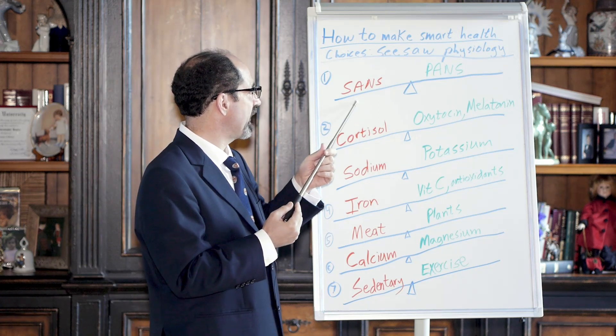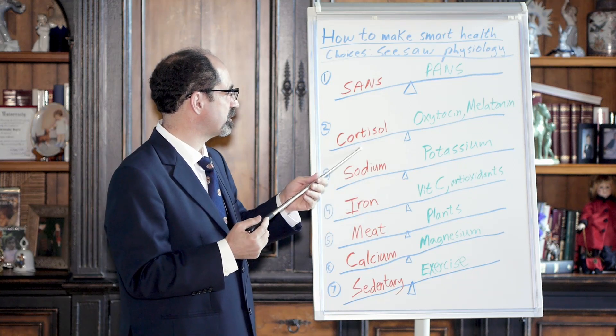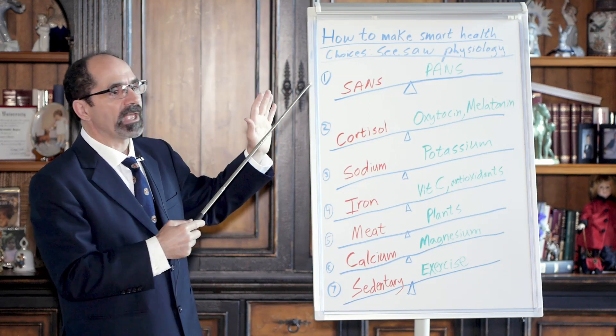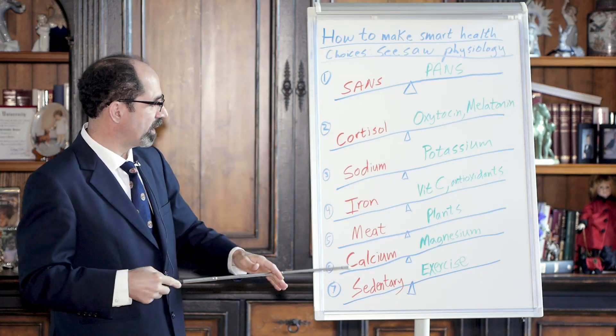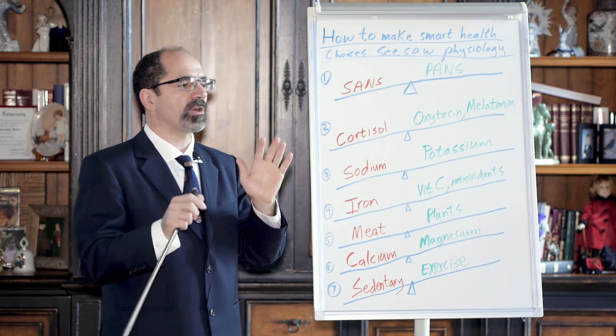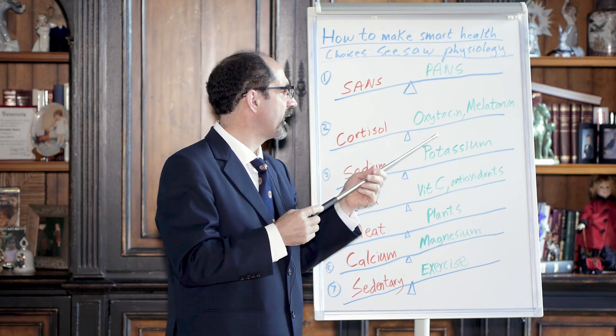Alright, so now SANS with a stress response, we've talked about this in other lectures, but it's associated with increased cortisol. All the stuff on this side is the stuff that the average American tends to have too much of and it's harming their health. Cortisol is an unhealthy hormone. We talked about that quite a lot with lectures on caffeine and stress and whatnot.